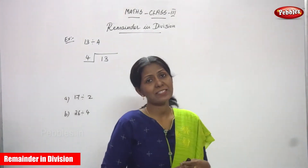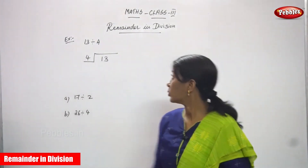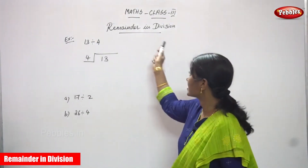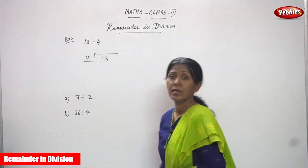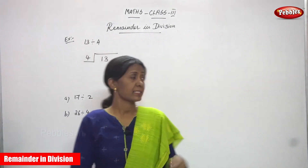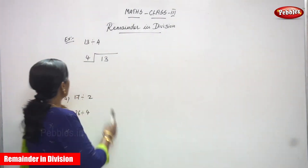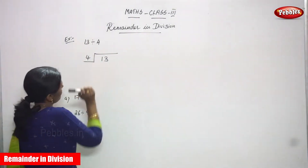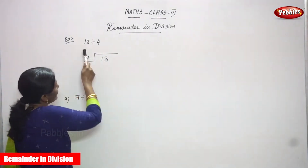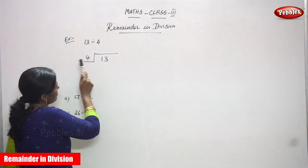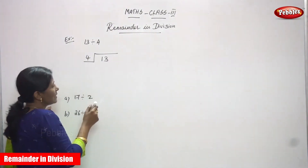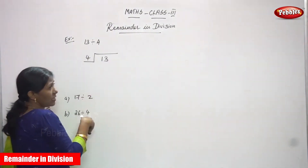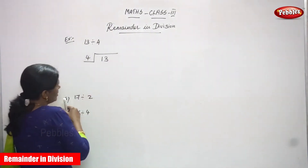Hi, welcome you all to Pebbles. In today's class, we are going to see remainder in division. Let's start the class. First sum: 13 is going to be divided by 4. So 13 is a dividend and 4 is a divisor. It's a long division method.